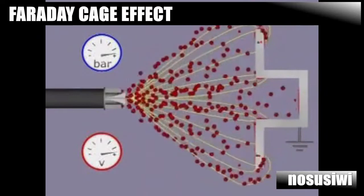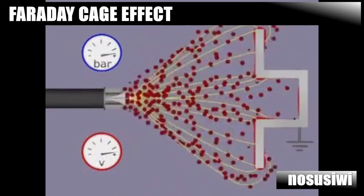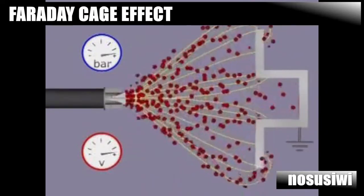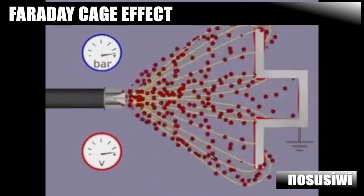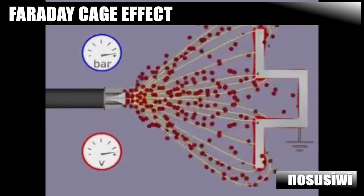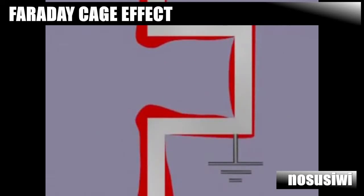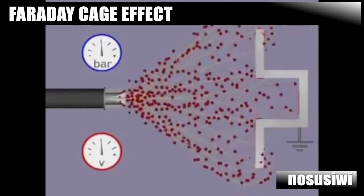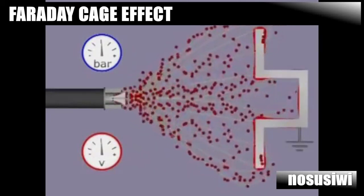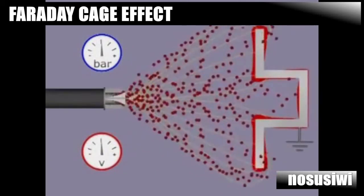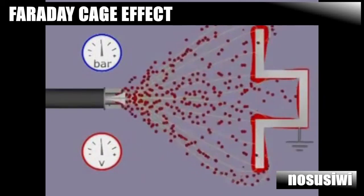To overcome the Faraday-Cage effect, there are different techniques to apply. By increasing the air pressure, powder particles may break out of the electrical field and penetrate the recess. By decreasing the voltage, the electrical field will be weaker, and it is easier for the powder particles to break out of the electrical field and penetrate the recess.